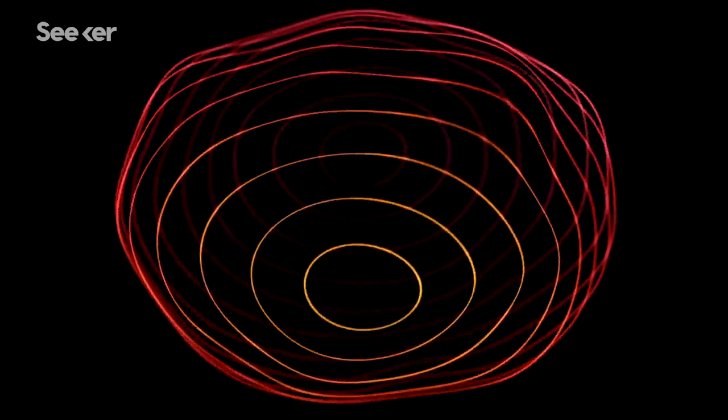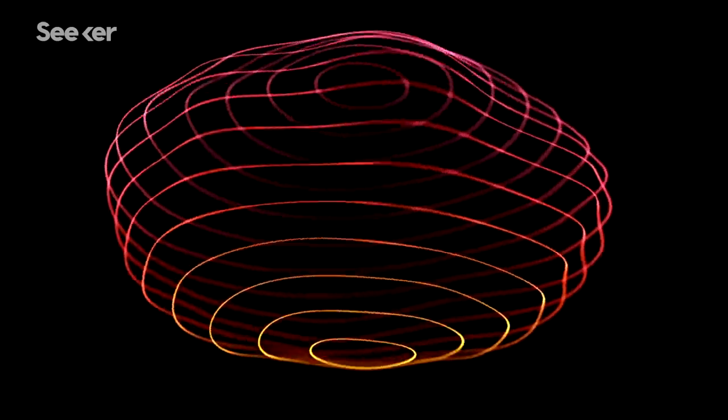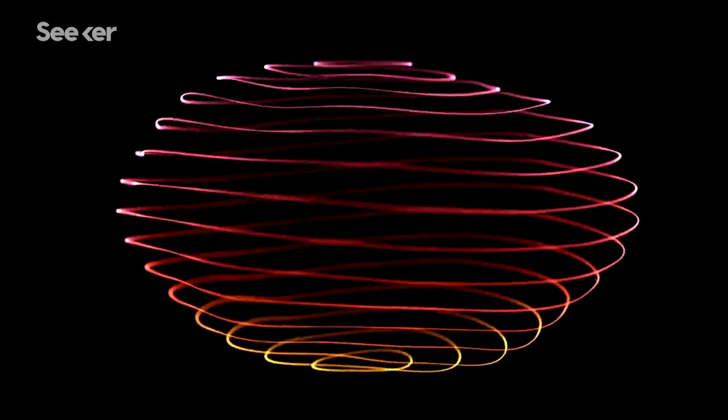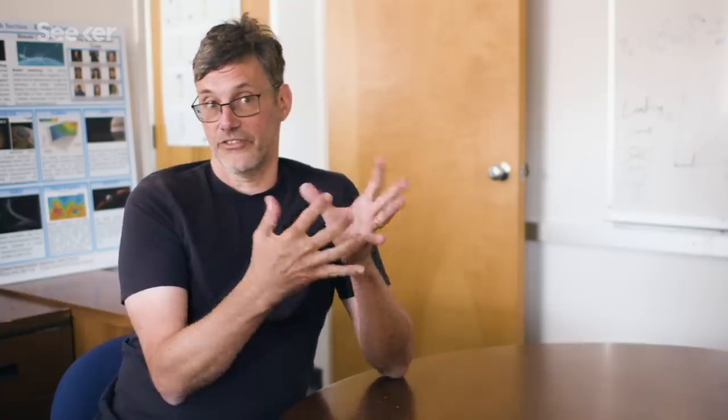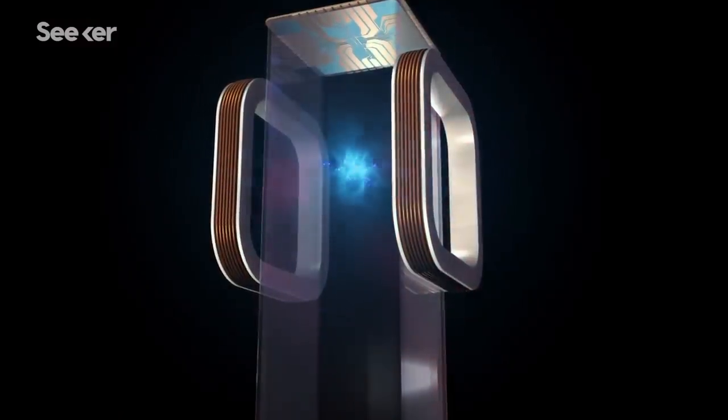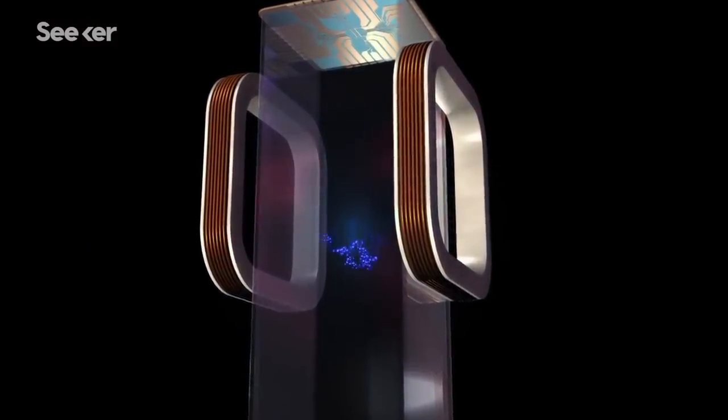We're confining them with magnetic fields and the magnetic fields themselves are changing and perturbing the atoms. So we would like to turn off the fields and just study the atoms on their own. But of course, in gravity, they just kind of go plop.